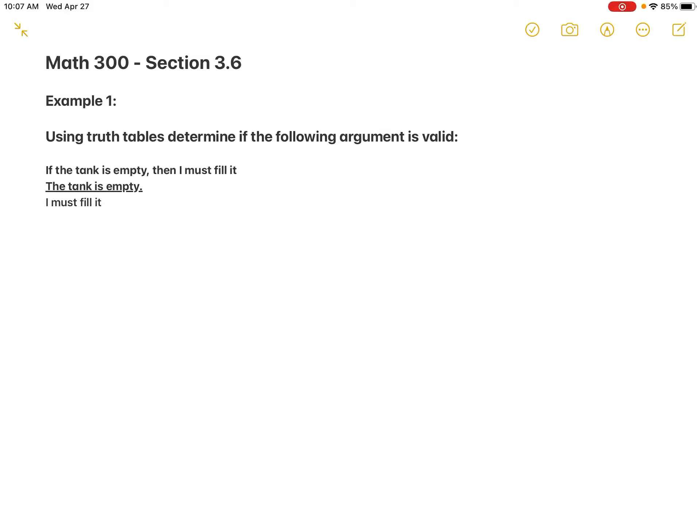Here we find ourselves in section 3.6, which is about using truth tables to analyze arguments and determine whether they're valid or not. I have six homework questions for you in this section, all of which use truth tables to evaluate an argument. I wanted to show you how that's done by looking at a few examples — I might split them into two videos depending on how long they get.